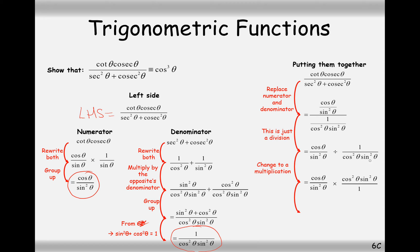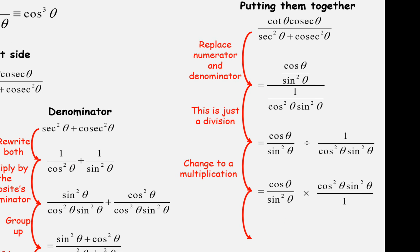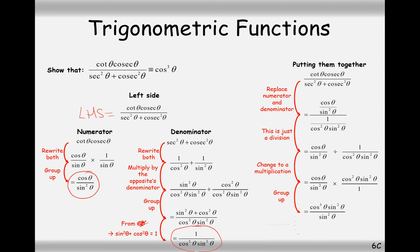So we've flipped this fraction on the right-hand side here, but we're now going to multiply. That is how you divide fractions, you times, but flip the second one. And then we can see here that a bunch of this stuff here will cancel out. So, the sine squared would cancel out with the sine squared, and we'd just end up with cos cubed theta. There we are. That's the answer to this question here, then.